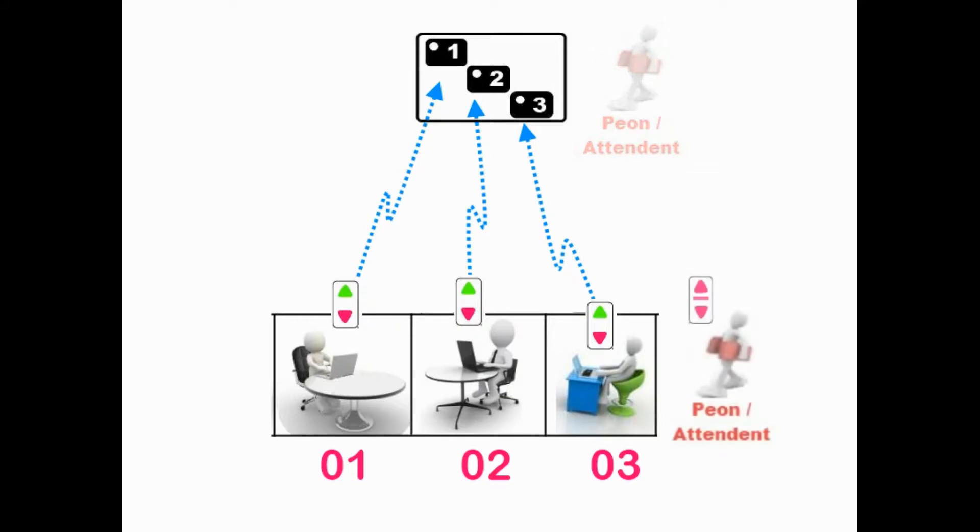After the peon attends the staff member, he can cancel by pressing the remote at the officer's cabin. Alternatively, the peon can also carry his own cancellation remote.